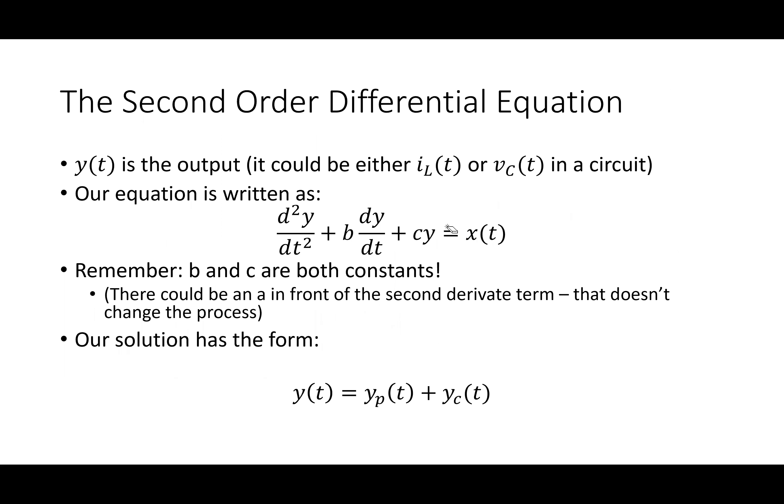For second-order systems, y(t) is the output — it can be an inductor current or a capacitor voltage, those are the two things we're always solving for. The equation has that form where typically the coefficient on the second-order term, the second derivative, is set equal to one. You can always manipulate it so that's the case.